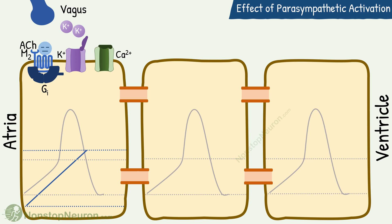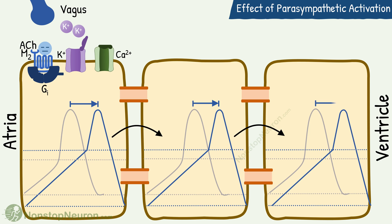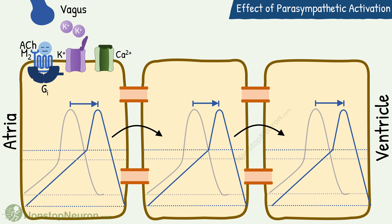Closing calcium channels raises the threshold level and also makes phase 4 less steep. Because of these changes, it takes more time to reach the threshold and the action potential appears later — the generation of action potential is delayed. These changes occur in subsequent cells also. So when the first cell excites the second cell, the action potential is delayed in the second cell too. Similar delay occurs in all the cells, so it takes longer for the impulse that enters at the atrial end to emerge at the ventricular end. In other words, parasympathetic stimulation slows down impulse conduction in the AV node.